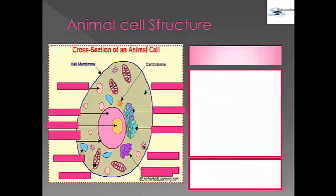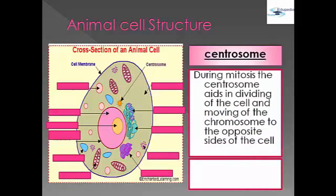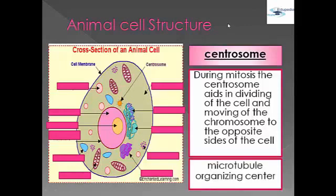The second part is the centrosome. During mitosis, the centrosome aids in dividing the cell and moving chromosomes to opposite sides of the cell. It is also called the microtubule organizing center, as it organizes substances and distributes them to other parts of the cell.